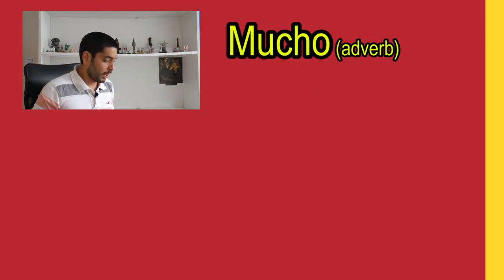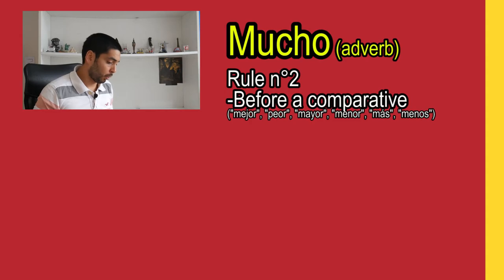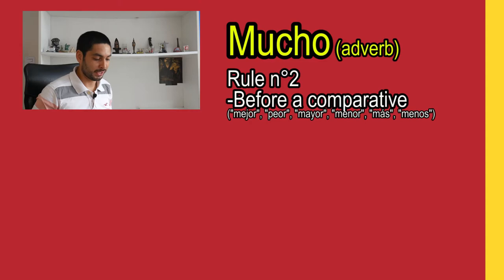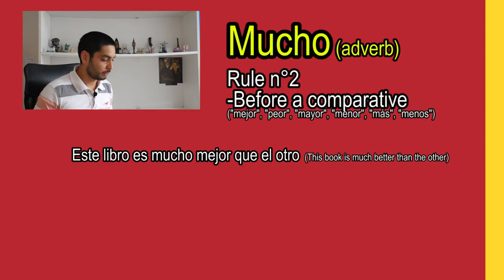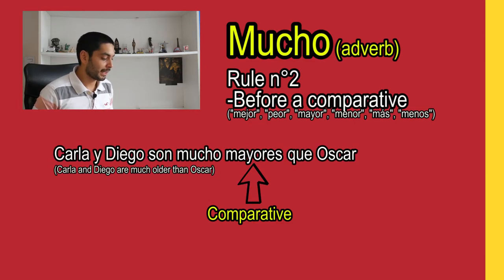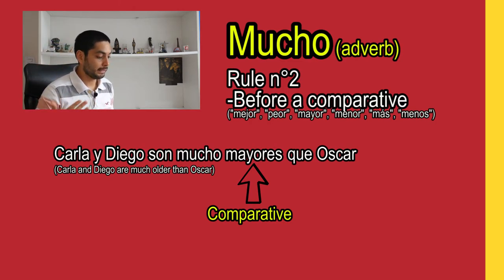Another way to use mucho as an adverb is after the comparatives: mejor, peor, mayor, menor, más, or menos. For example: Este libro es mucho mejor que el otro. Another example: Carla y Diego son mucho mayores que Oscar.